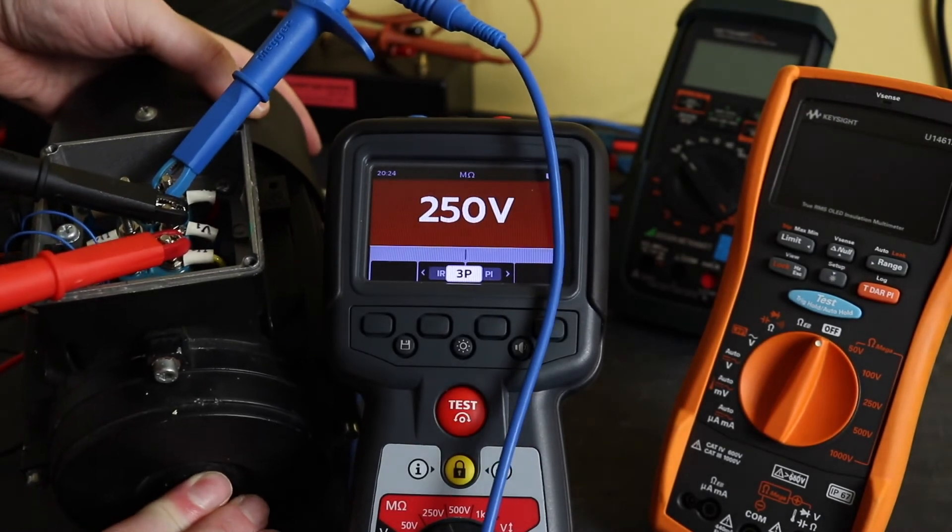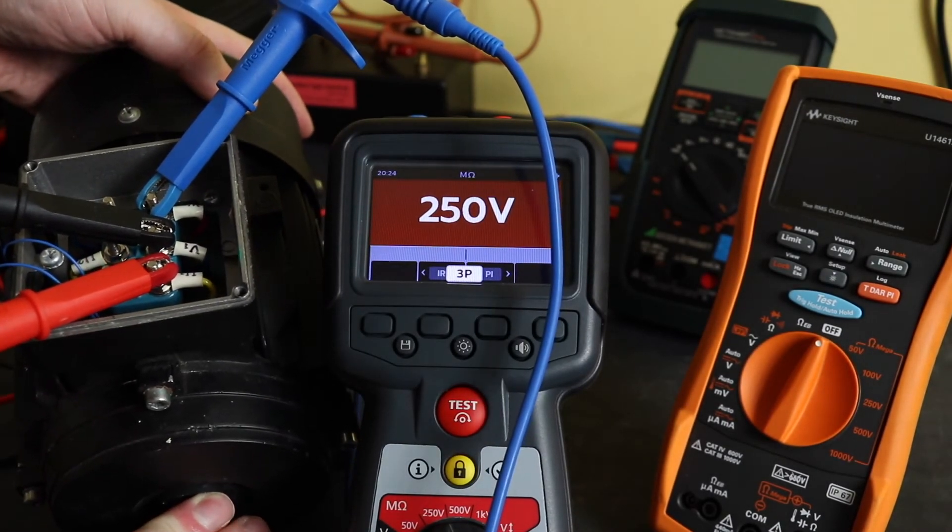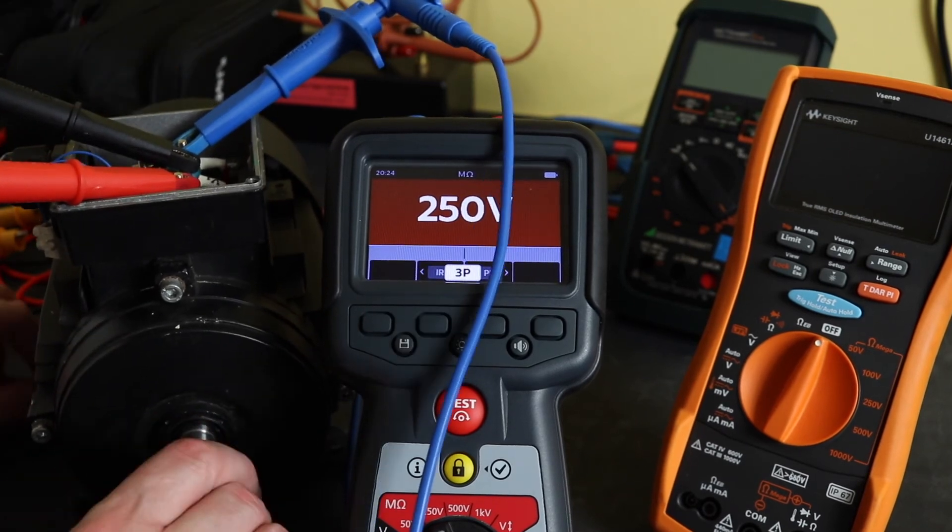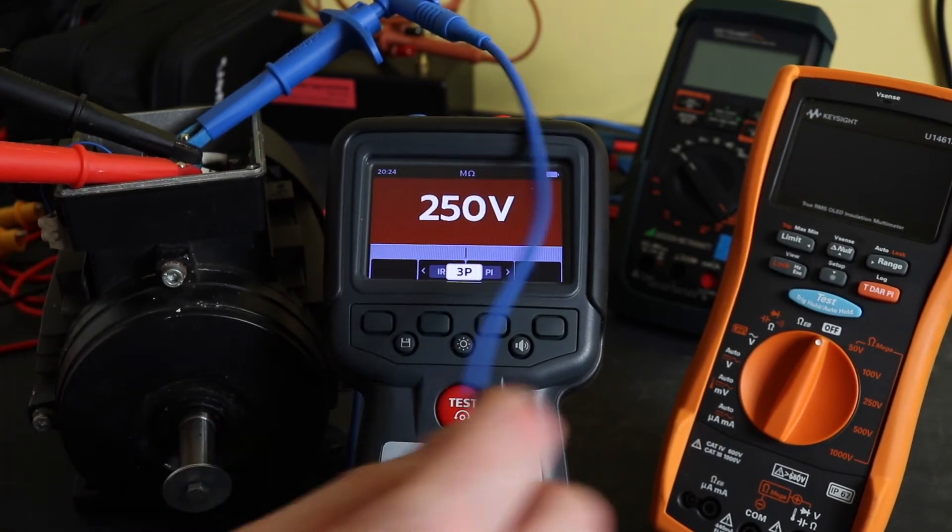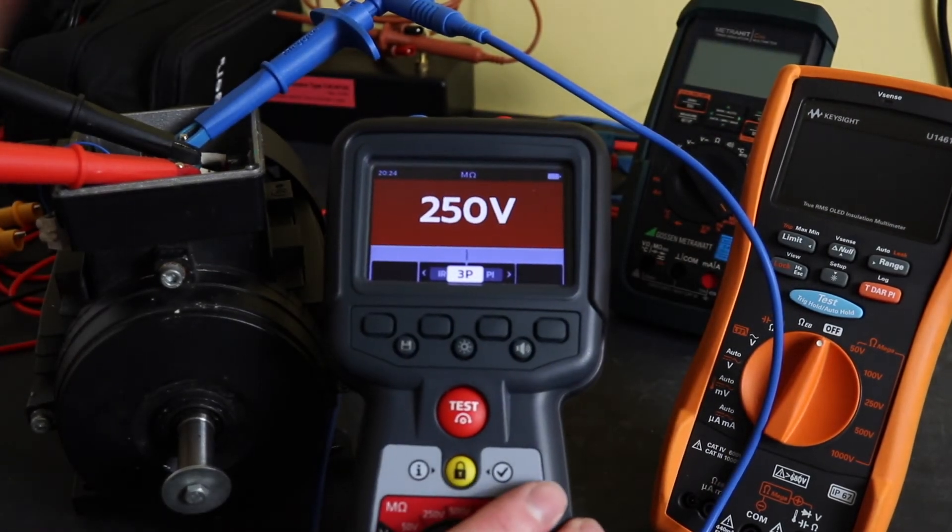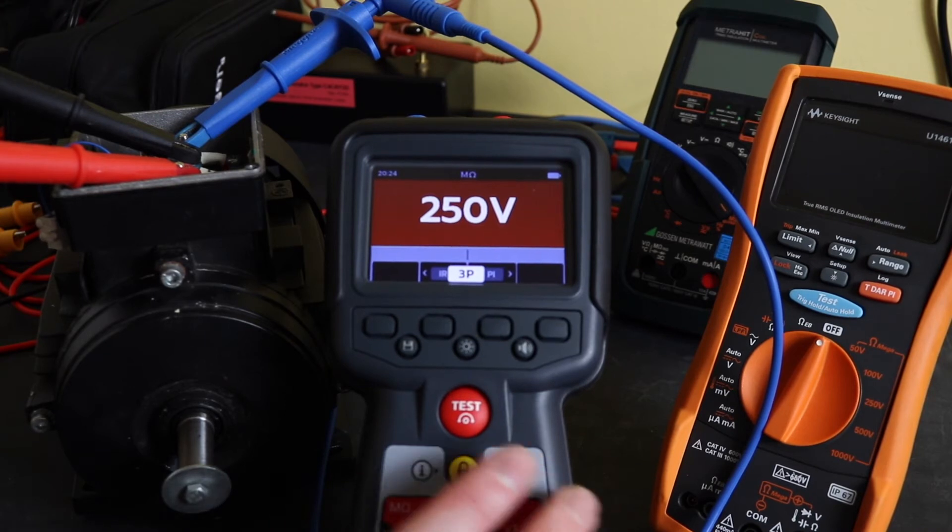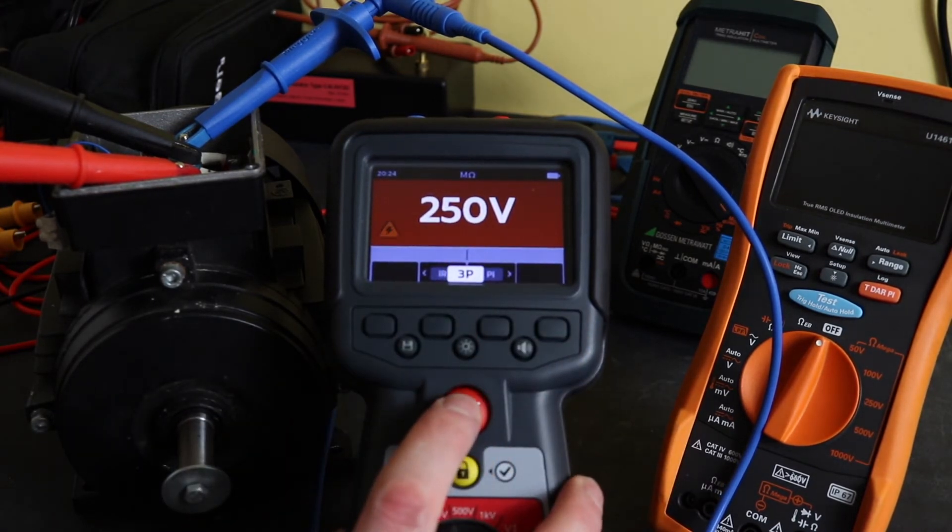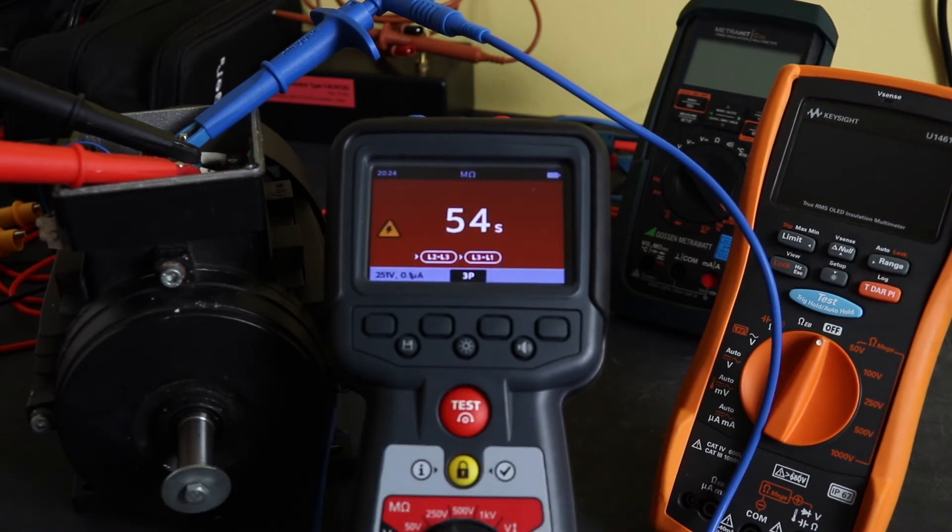So you can see there, there's my three connections onto the winding. And move them out of the way. So it'll be a 250 volt test, and it'll run for three minutes. So I'll just hit the go button, and you'll see what it does.